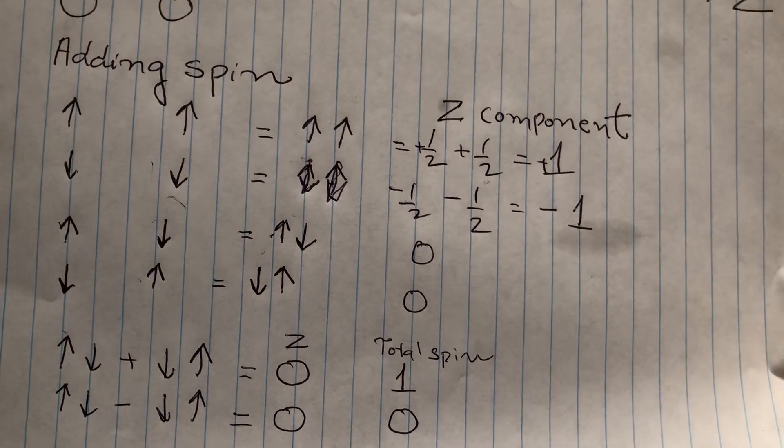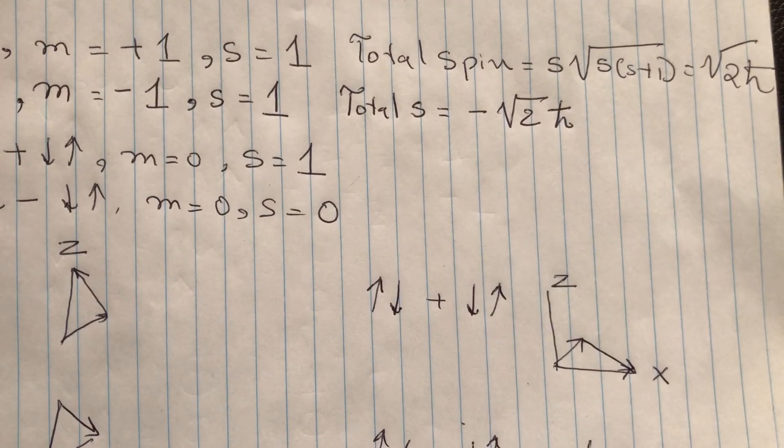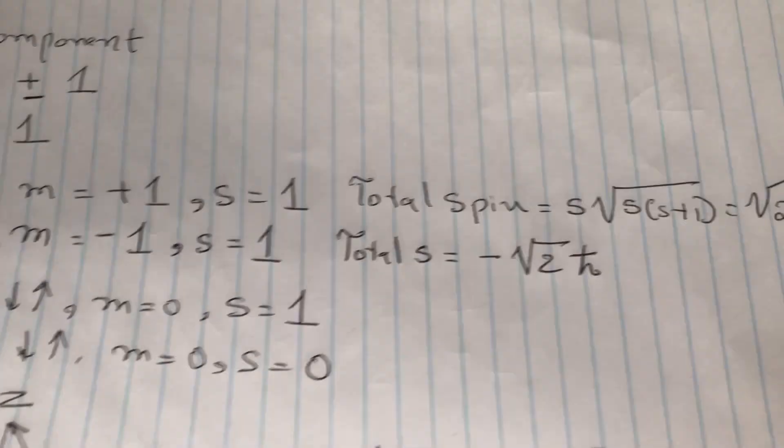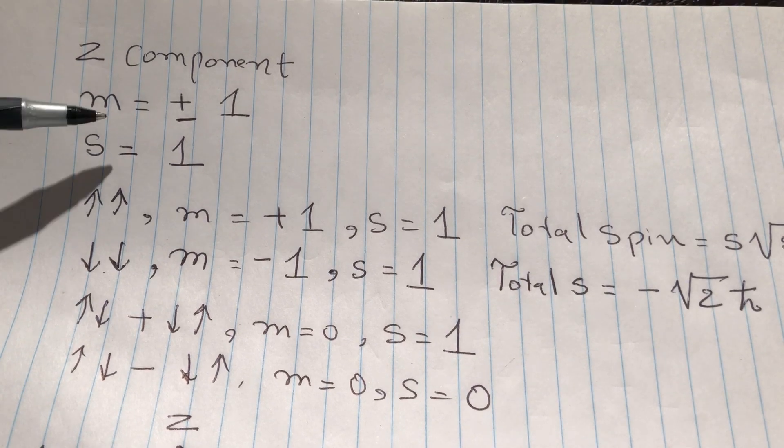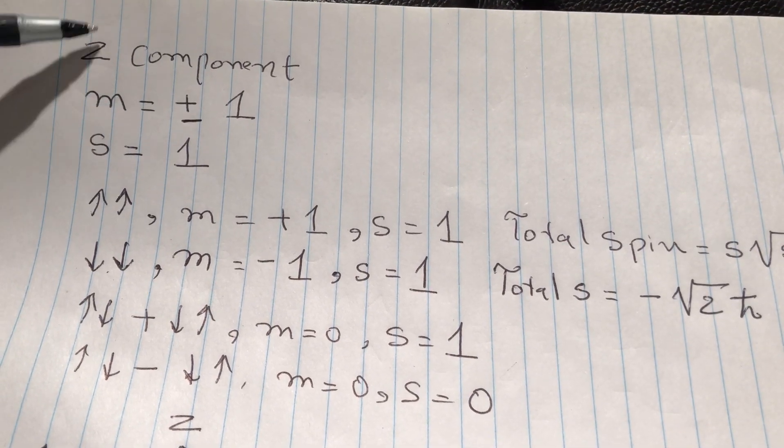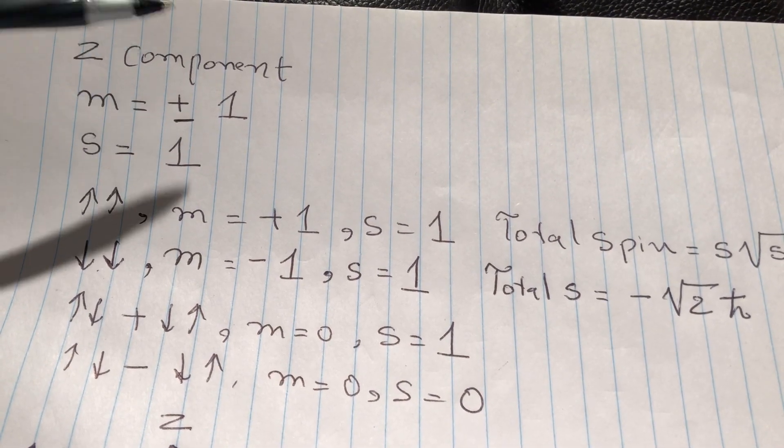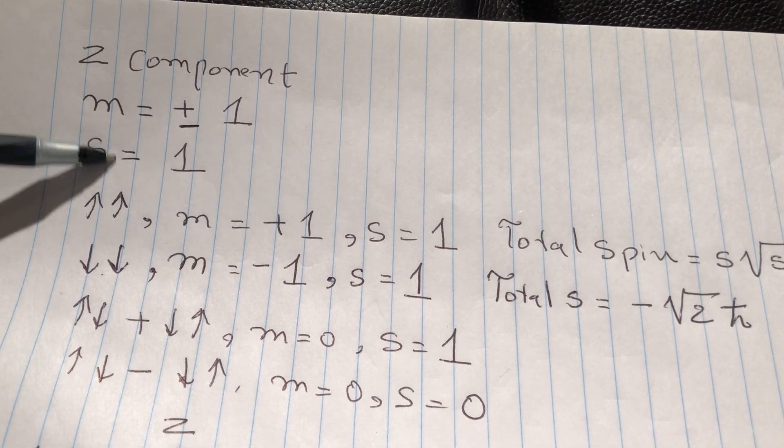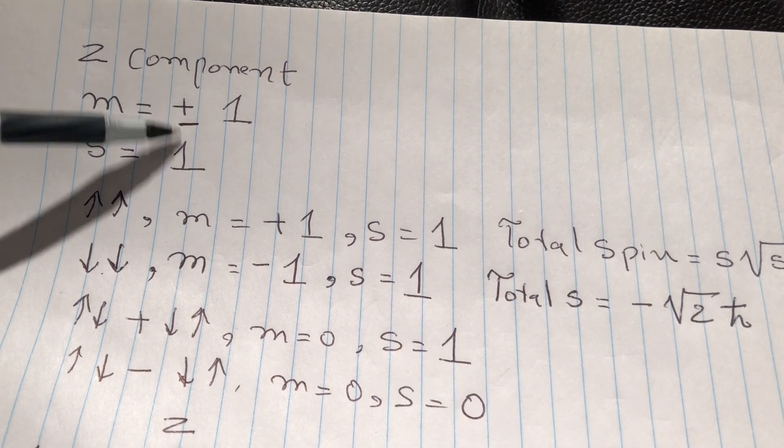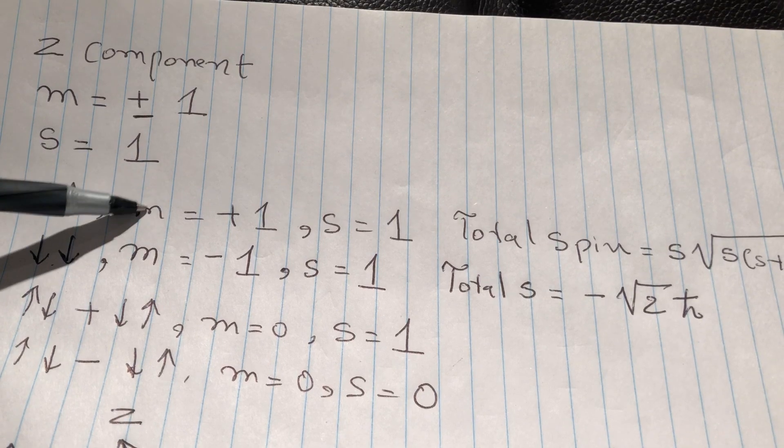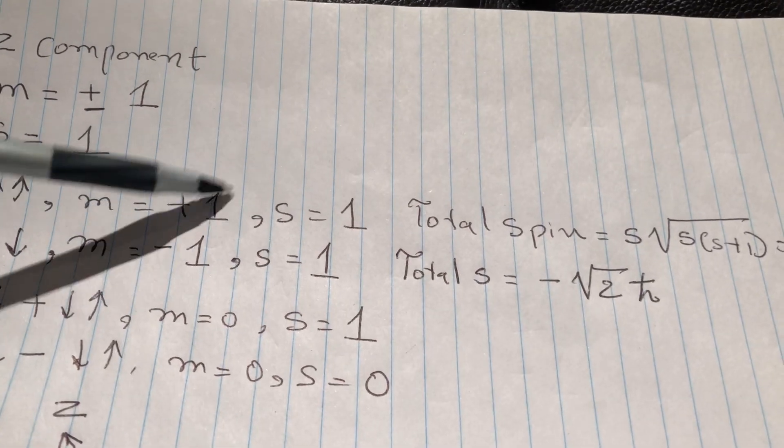The z component is also called a magnetic quantum number. It can take plus or minus values. The total spin quantum number does not take any plus or minus values. So in up-up state where the z component is plus one, the s is just one.